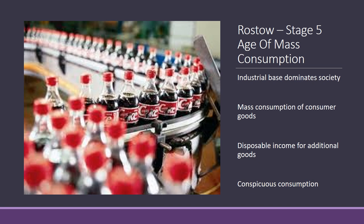At stage five, this is where the UK, the US, most of Western Europe, and places like Japan are — an age of mass consumption. There is mass consumption of consumer goods; people earn enough money to purchase these goods and have disposable income, or if they don't, they have credit. This leads to what's called conspicuous consumption — purchasing things becomes a pastime and we are judged by the labels we wear. The ultimate goal for Rostow was for us all to be drinking Coca-Cola, wearing Nike trainers and Levi's jeans. This was the stage Rostow wanted all nations to develop to.